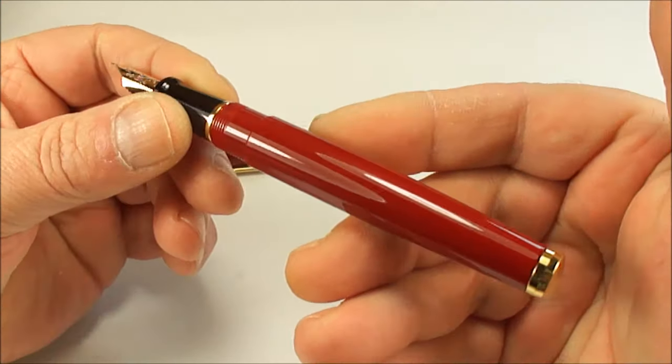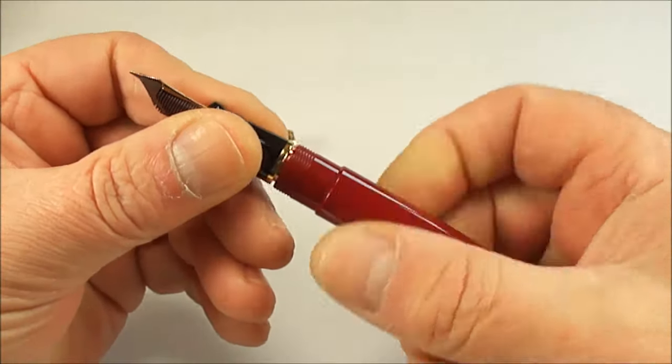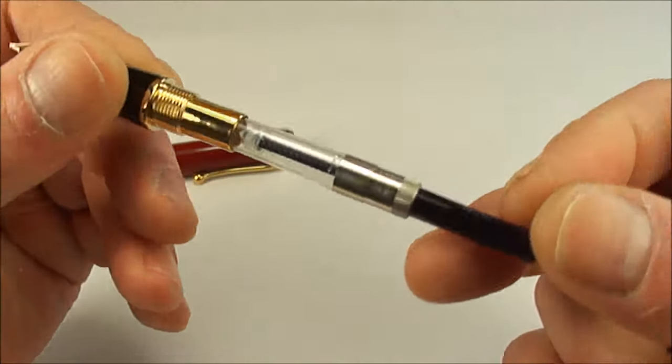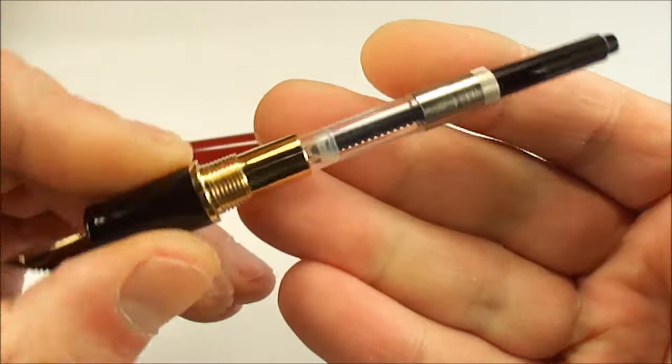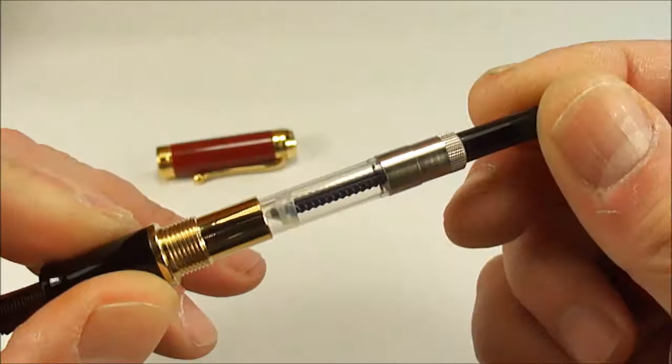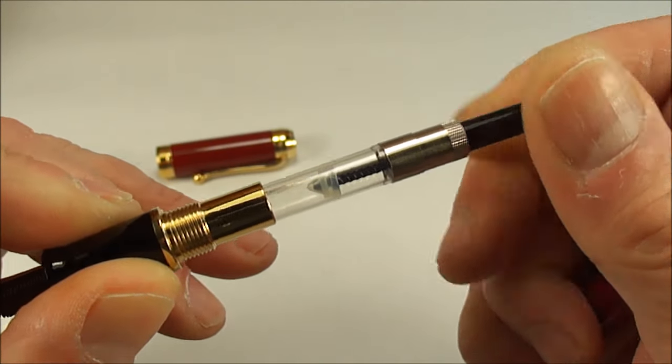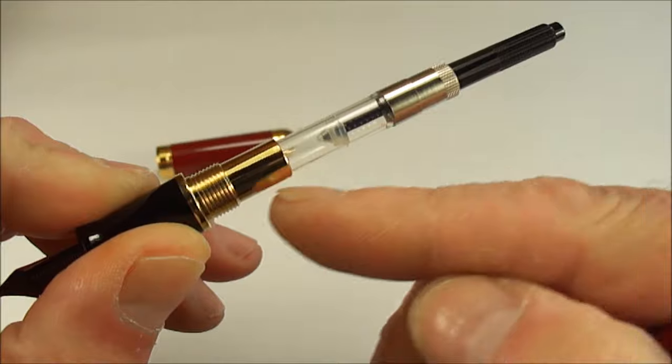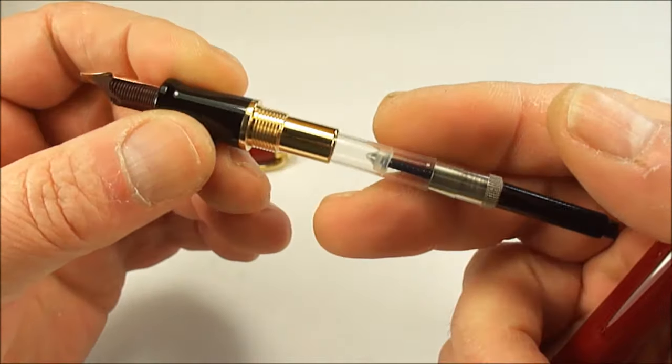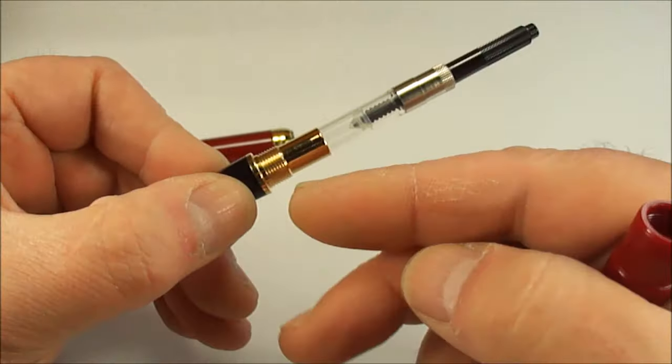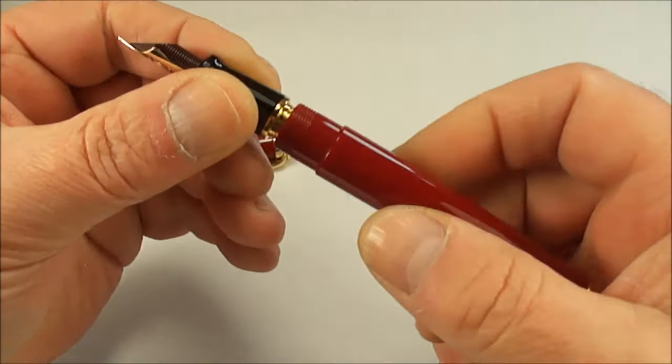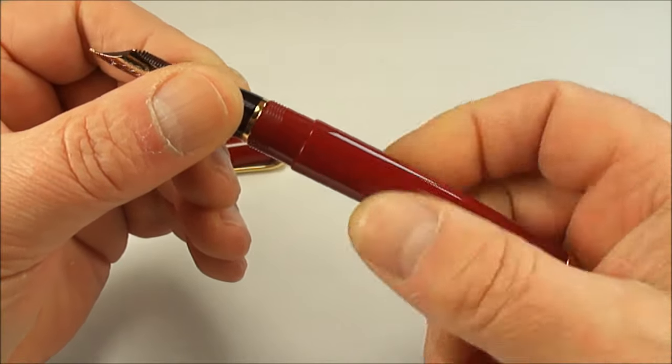The pen is what they term as a cartridge converter, which means if we unscrew the barrel you can see inside there we've got the standard sort of Aurora converter which as you no doubt know just simply means that you can twist the end and it actually fills with your favorite ink. If you don't like the converter, as it says it's a cartridge converter pen so you can use cartridges with it if you wish.